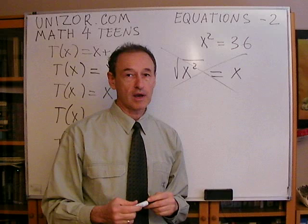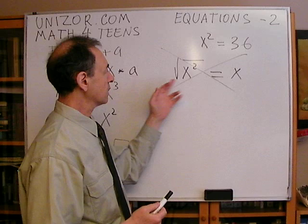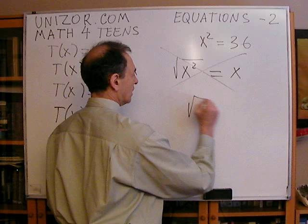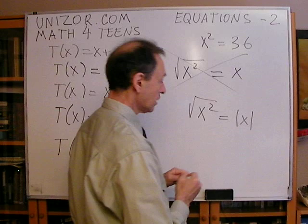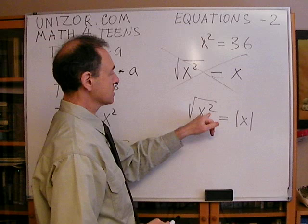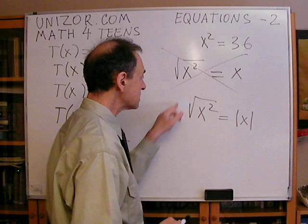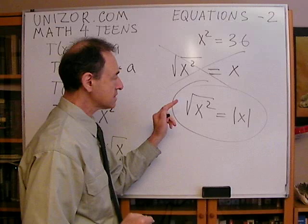When talking about equations, you really have to understand what the square root is. In most cases, it's assumed to be the arithmetic square root — only the non-negative value. So what is the square root of x squared? It is not x — that's wrong. Since we assume arithmetic root, the left side is always the non-negative number whose square gives x squared. The correct identity is: square root of x squared equals the absolute value of x.